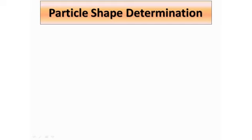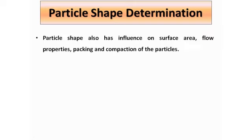Particle shape determination. We have already determined the size of the particle. Now particle shape determination needs to be studied in micrometrics because the particle shape actually helps in the packing as well as in determining the surface area of the powder.